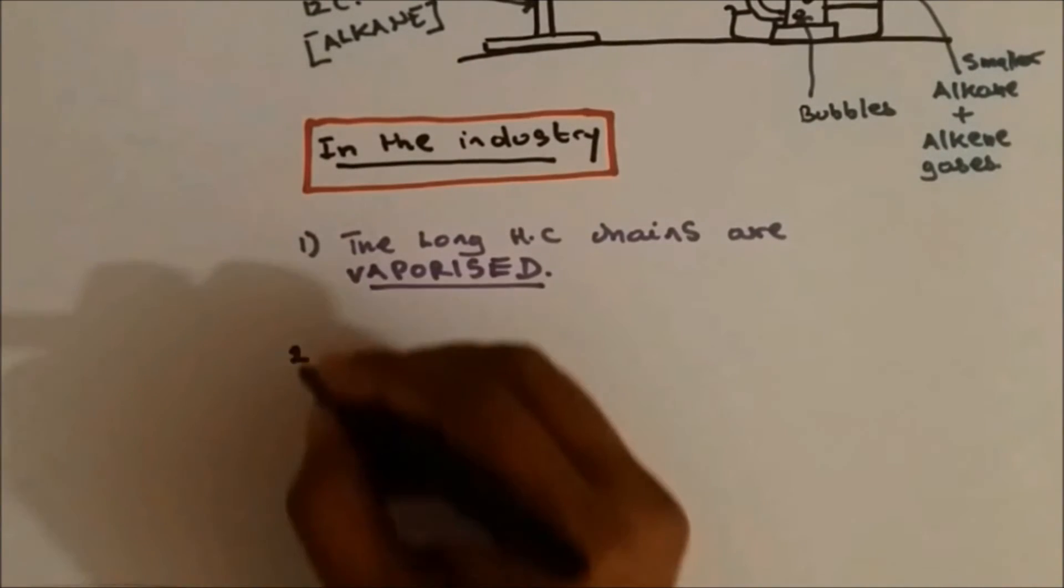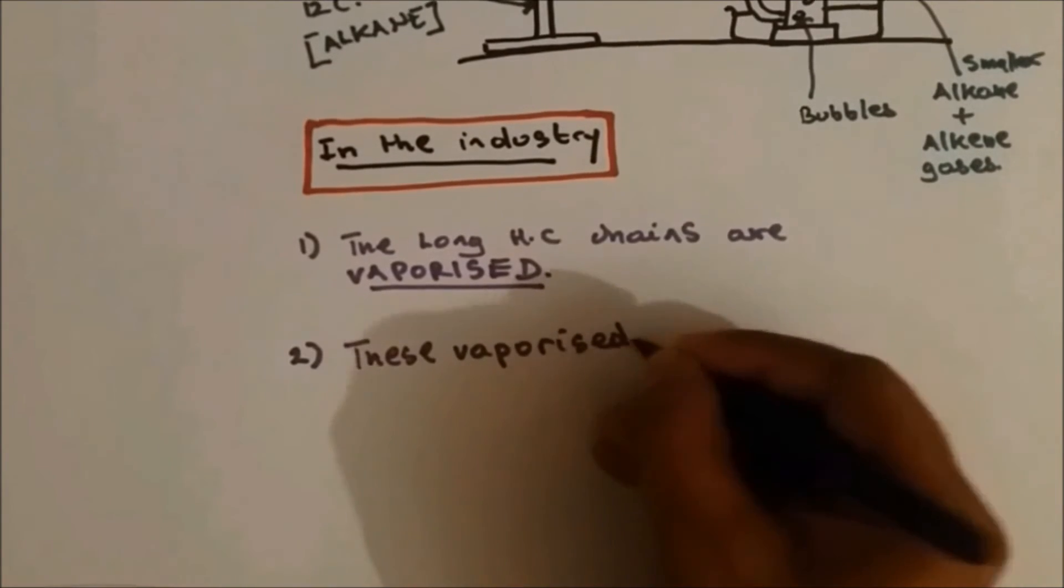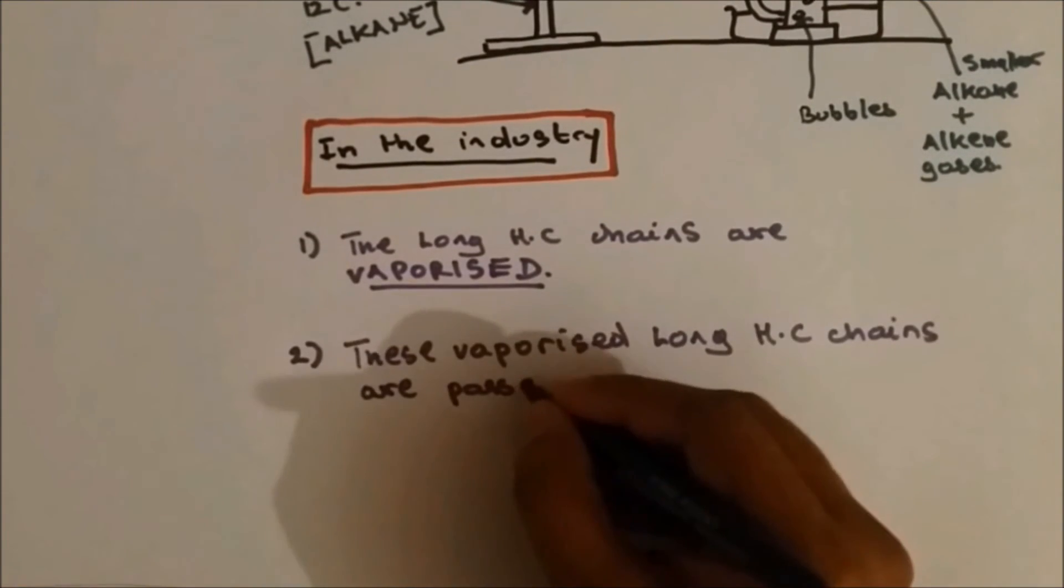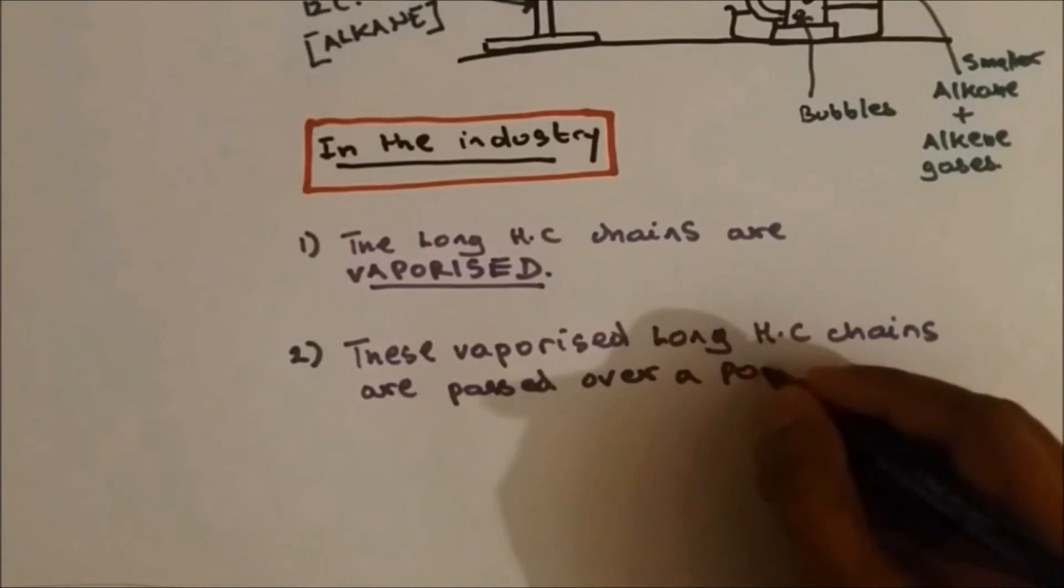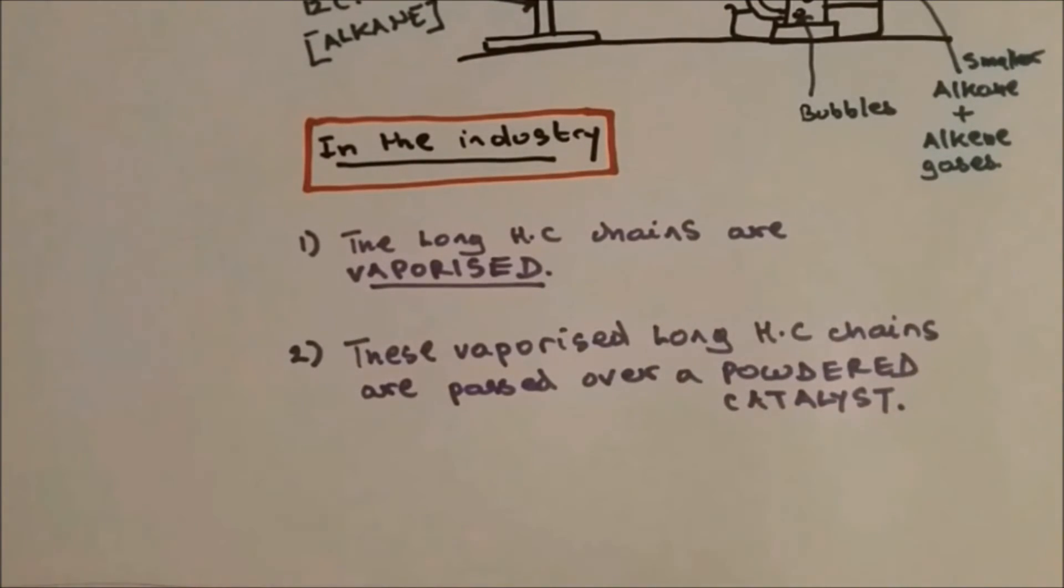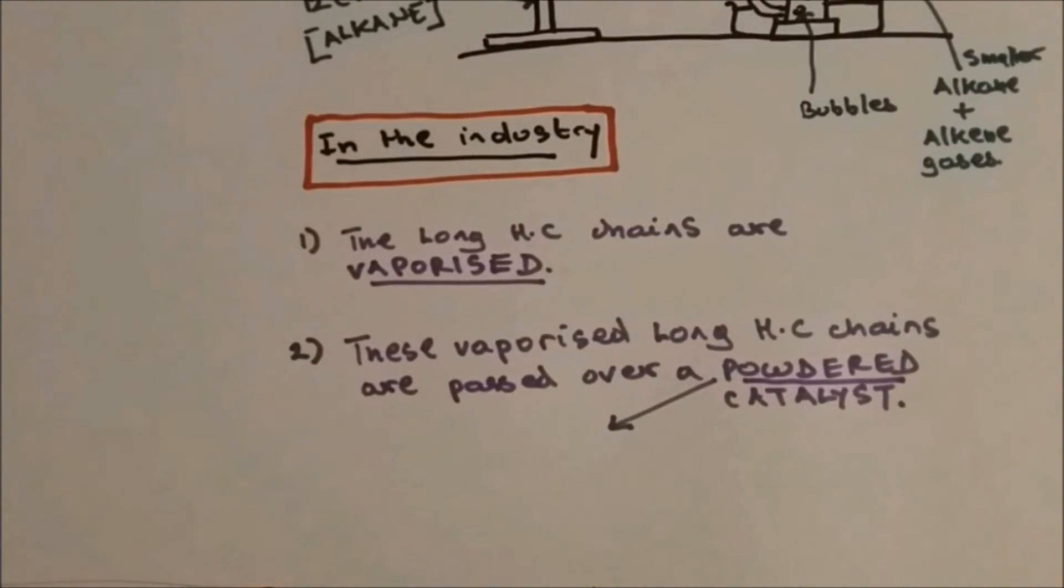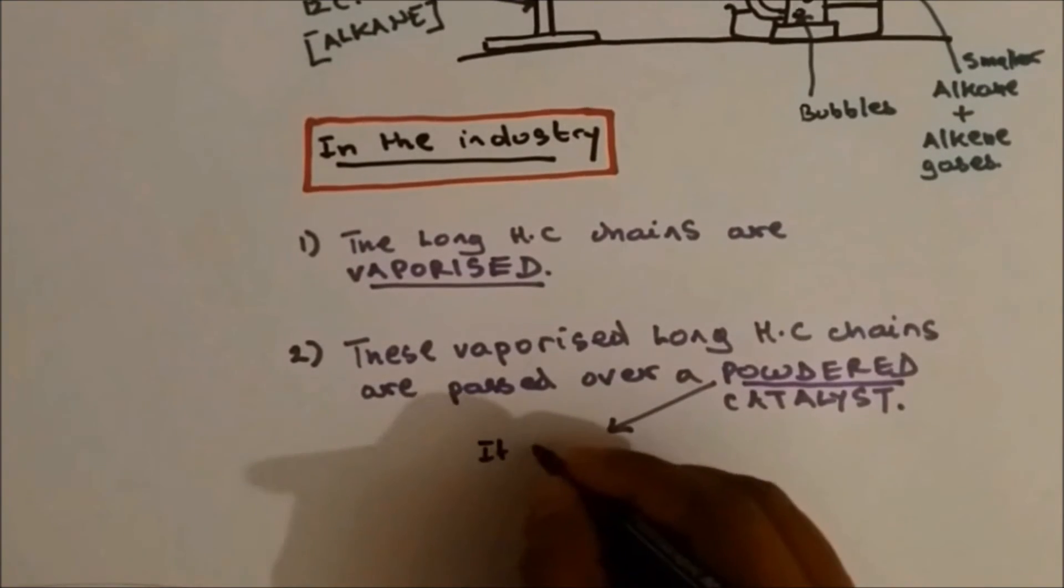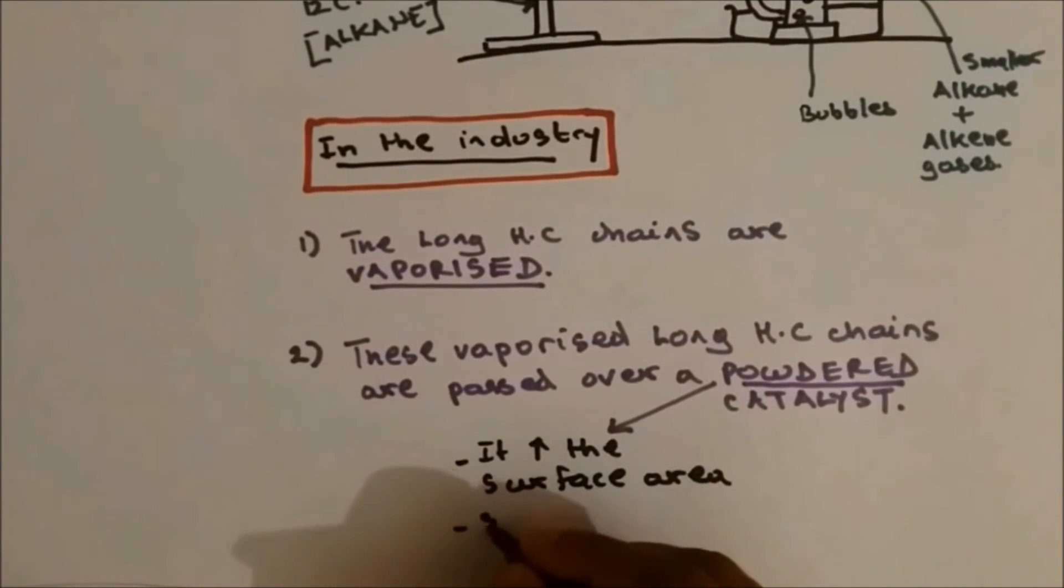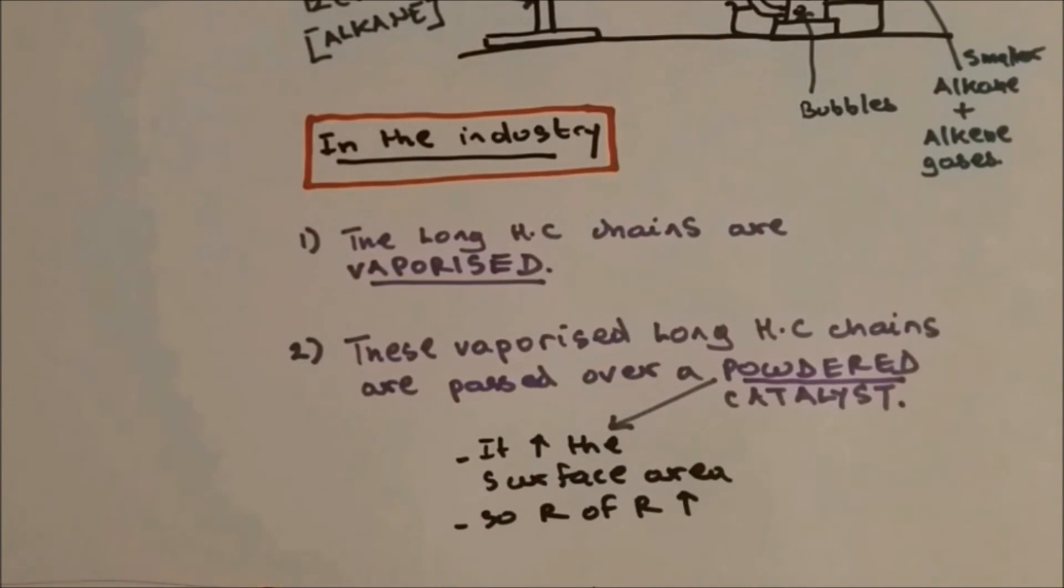The second step: these vaporized long hydrocarbon chains are passed over a powdered catalyst. Why powdered? Why is the catalyst found in the powdered form? Because it increases surface area, so rate of reaction will increase, so more products will be formed in the given time.